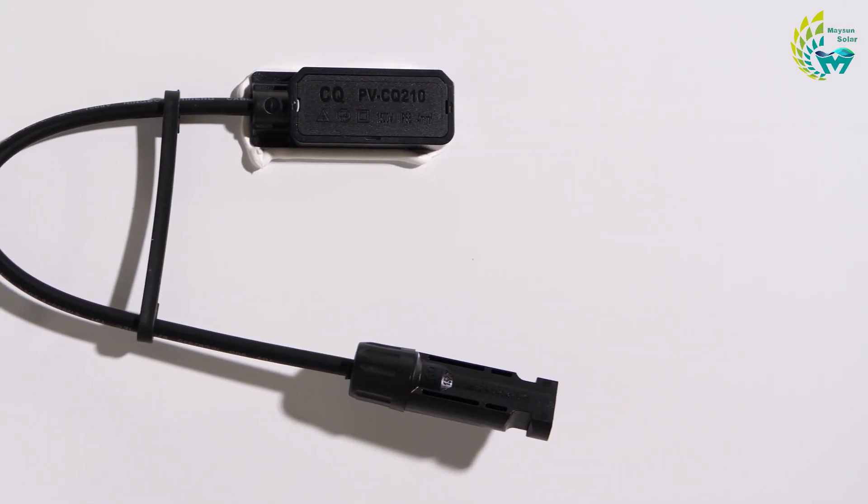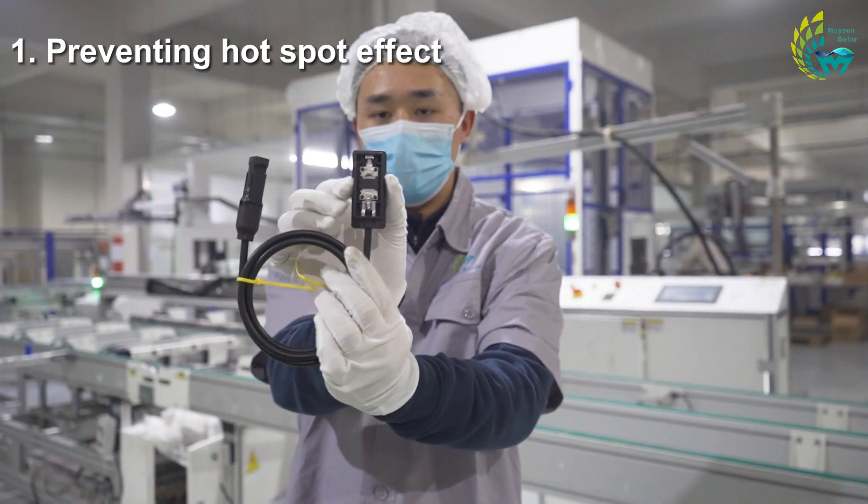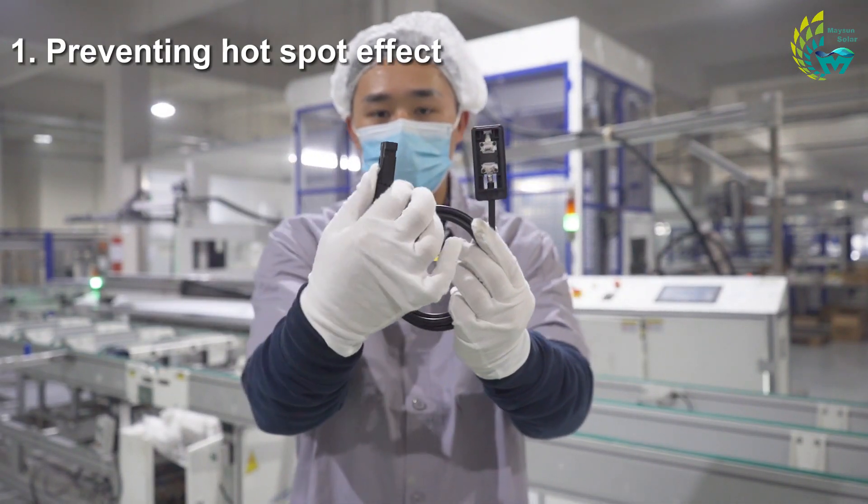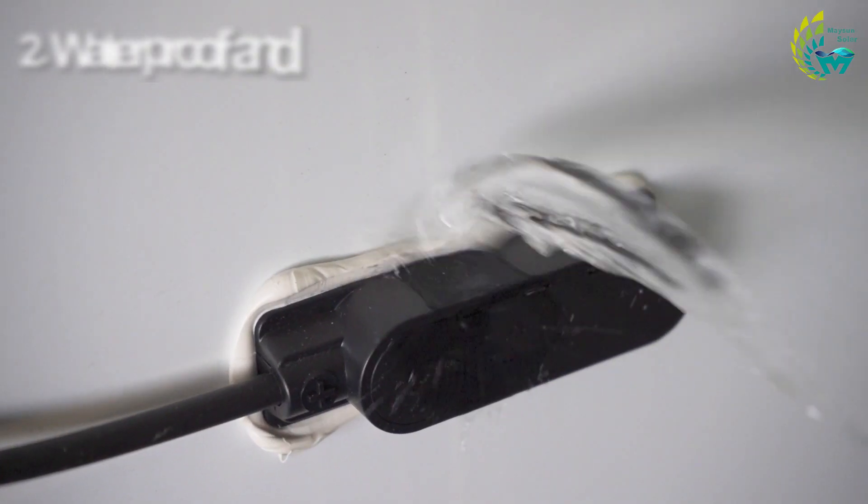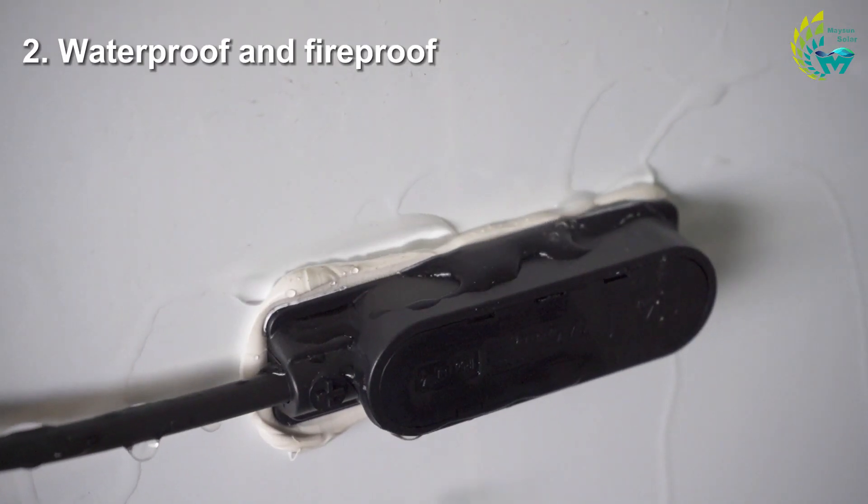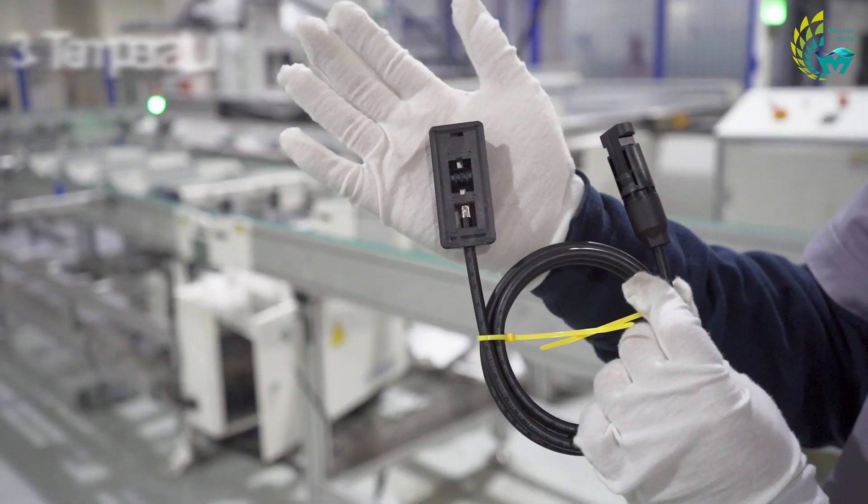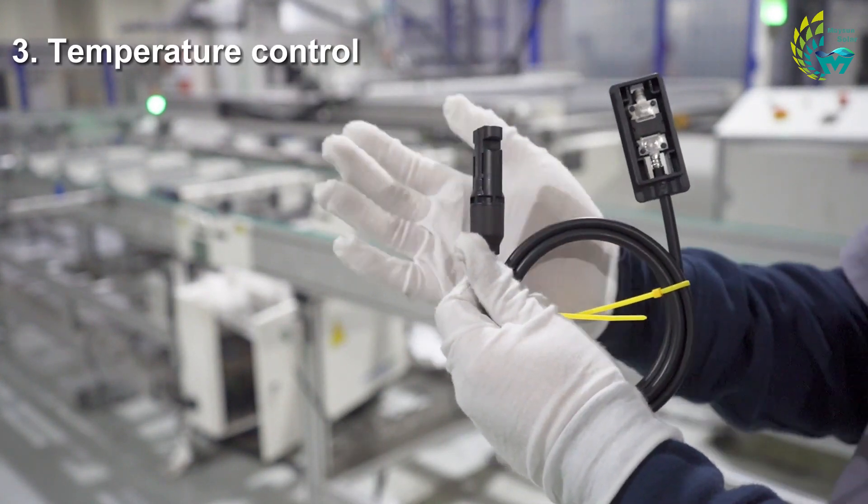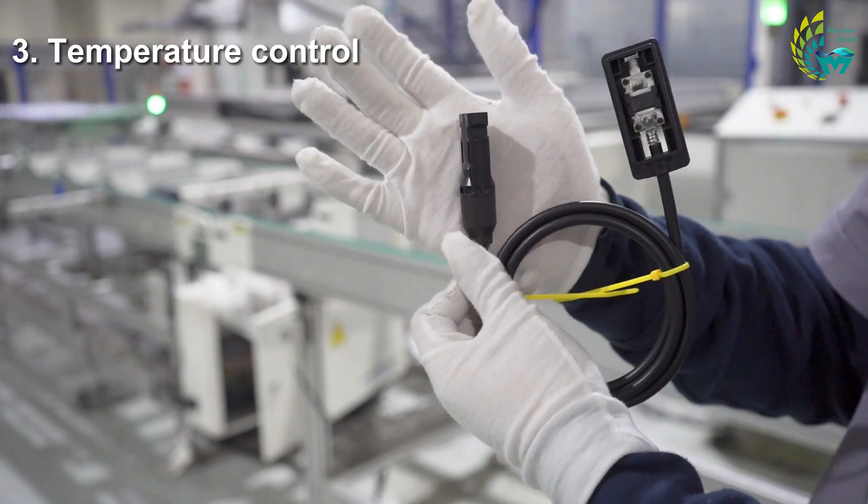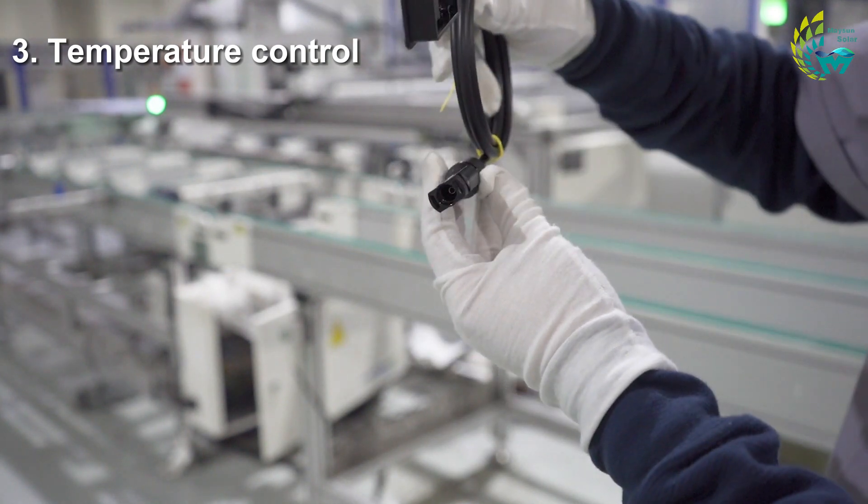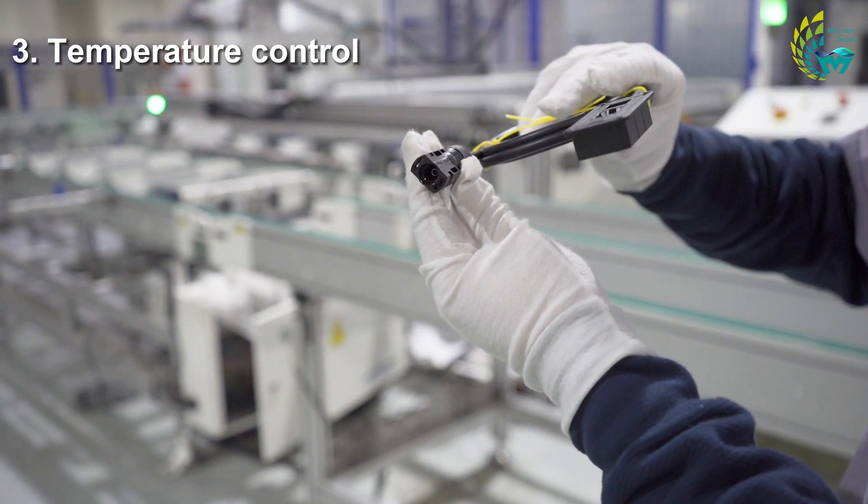The protection of the junction box includes three parts. One is to prevent the hot spot effect through the bypass diode to protect the cell and the module. The second is waterproof and fireproof through special material sealing design. The third is to reduce the working temperature of the junction box through special heat dissipation design to reduce the temperature of the bypass diode and thus reduce its leakage current to the module power loss.